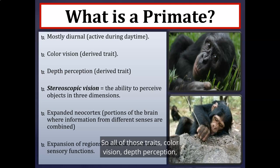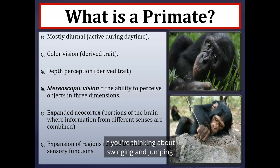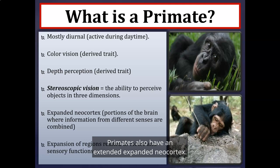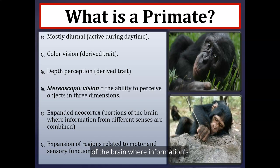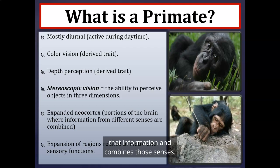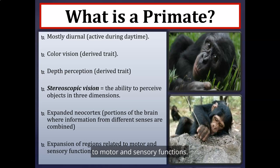Color vision, depth perception, and stereoscopic vision all enhance arboreal adaptations. Depth perception is very important when swinging and jumping through tree branches high off the ground. Primates also have an extended, expanded neocortex — the portion of the brain where information from different senses (sight, touch, smell, sound) is processed and combined. Primates also have expanded regions of the brain related to motor and sensory functions.